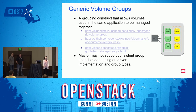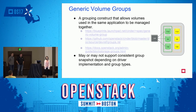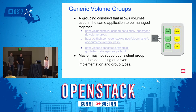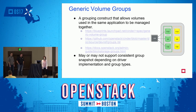The generic volume groups feature was introduced in Newton to provide a way to manage a group of volumes together. The motivation was that the existing consistency groups feature could only be supported by a small number of drivers. Generic volume groups provides a default implementation that works for every driver — it simply loops around and creates a group of volumes and corresponding snapshots. Drivers supporting consistency groups can add that capability to generic volume groups. Using different group types, a driver can create a group that supports consistent group snapshot or one that doesn't. It can also be extended to support other functionalities like replication groups.